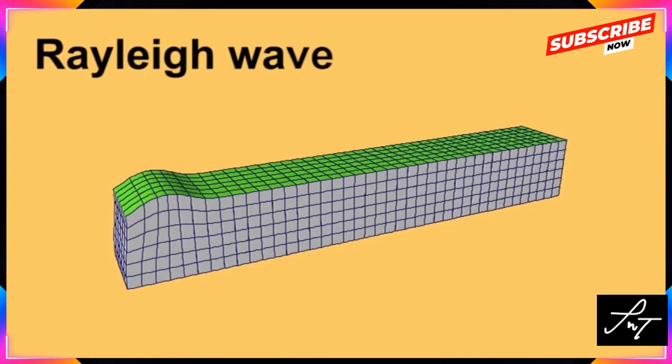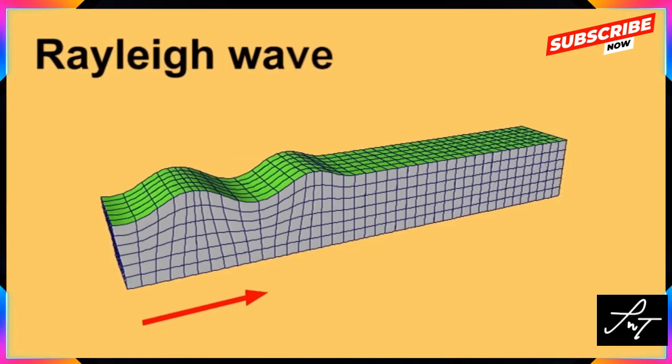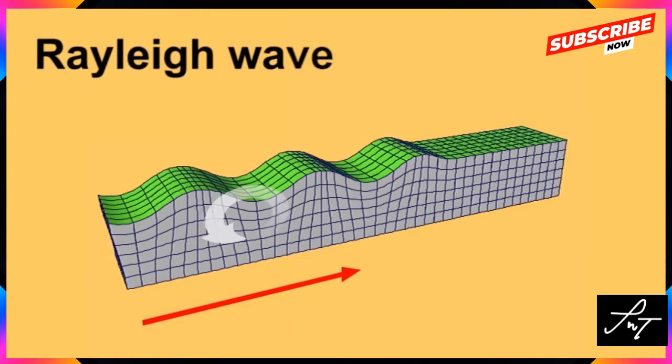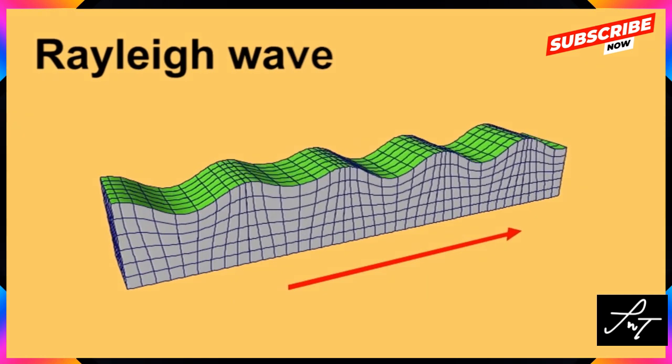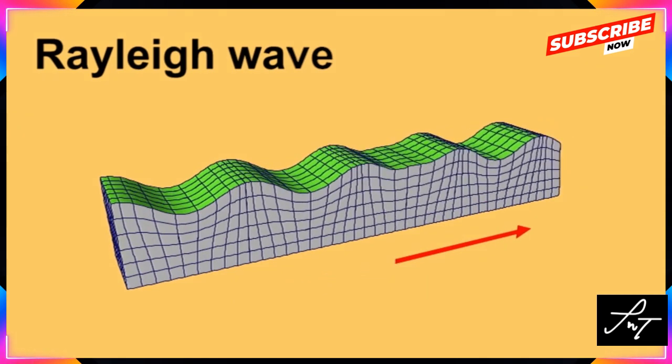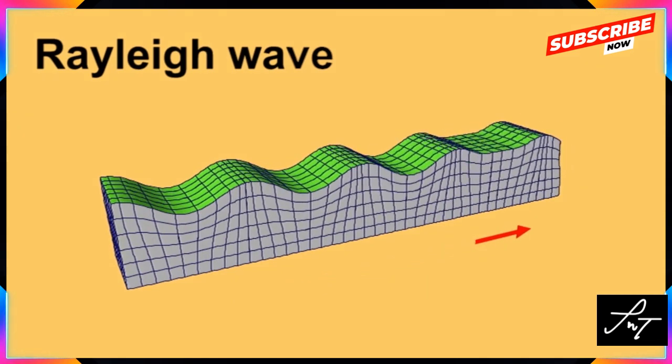And the slow but larger Rayleigh waves, named for British physicist Lord Rayleigh, which produce most of the ground movement felt during an earthquake.